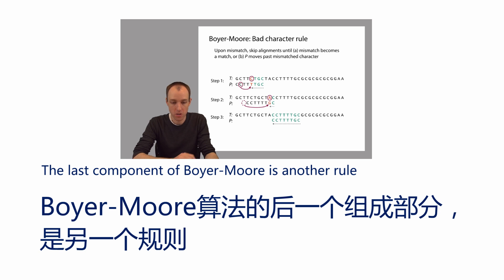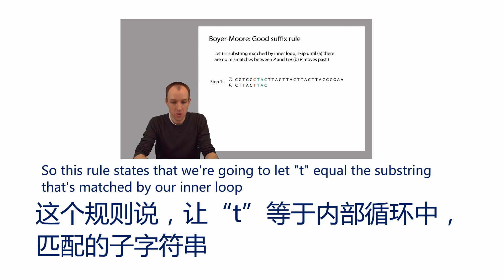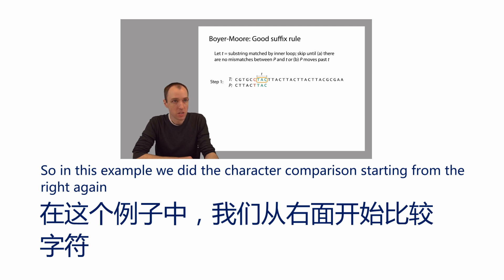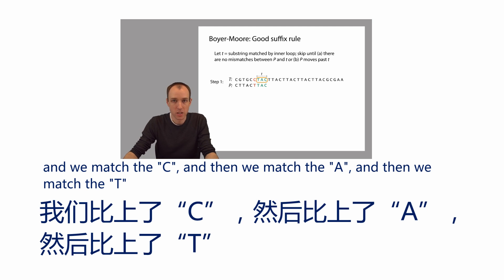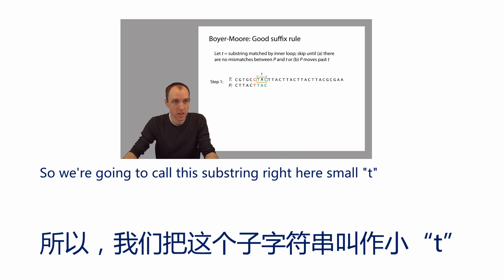The last component of Boyer-Moore is another rule called the Good Suffix Rule. This rule lets t (small t) equal the substring that's matched by our inner loop — the substring matched during character comparisons. In this example, doing comparisons from the right, we matched a C, then an A, then a T, and then reached a mismatch: a T in the pattern mismatched a C in the text. We call this matched substring small t.